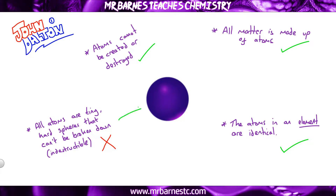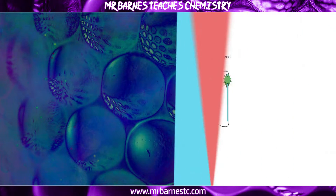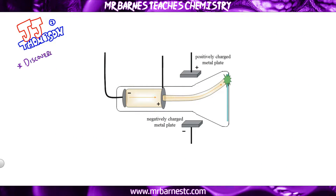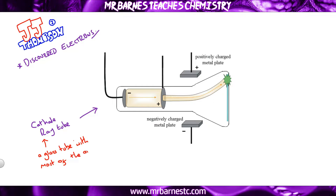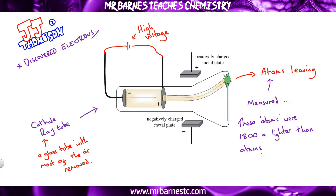So we need to figure out how we found out that atoms are not indestructible. The person that discovered this was JJ Thompson, and in particular he discovered the existence of electrons. He did that by using a cathode ray tube - a glass tube with most of the air removed. He put a high voltage through it and saw particles leaving the tube. He measured those particles and found a problem: they were 1,800 times lighter than any atom that had ever been discovered. What he had done was discover electrons.